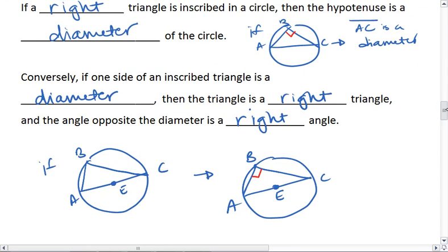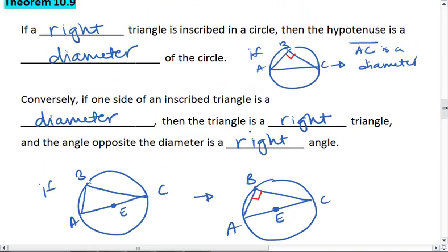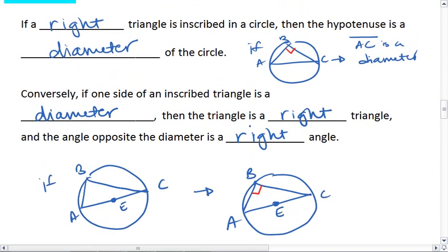So this works both directions. If we have a right triangle that's inscribed, then the hypotenuse is a diameter. If a triangle has one of its sides as a diameter, then the triangle is a right triangle.